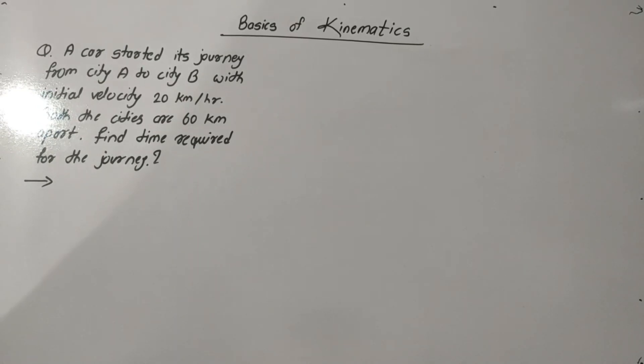Here is the problem: A car started its journey from city A to city B with initial velocity 20 km per hour. Both cities are 60 km apart. Find the time required for the journey.